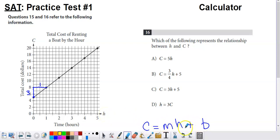So what I did right here is I rewrote slope-intercept form with c in place of y and h in place of x. If I'm trying to figure out which of these equations represents this linear graph, I'm going to have to figure out what the slope is and what the c-intercept is.